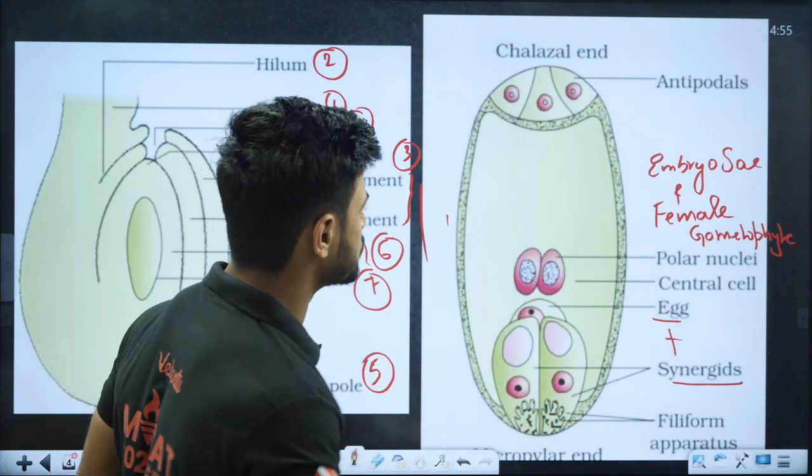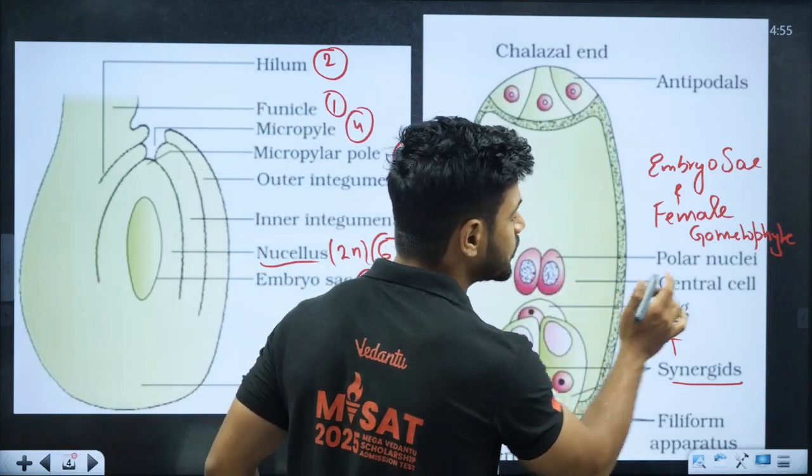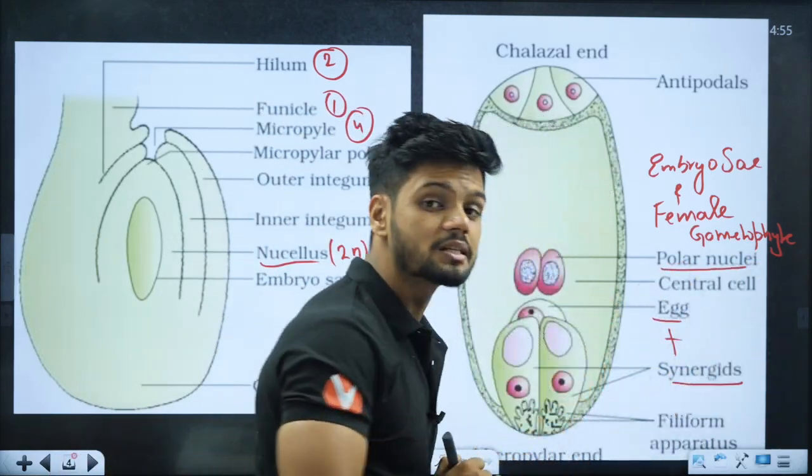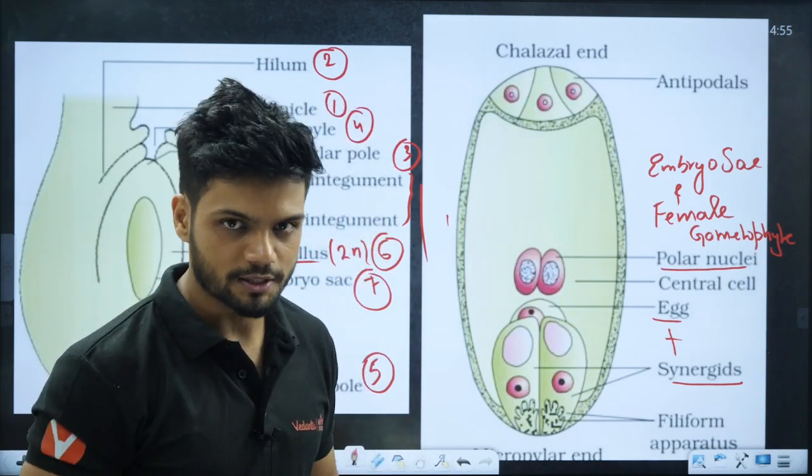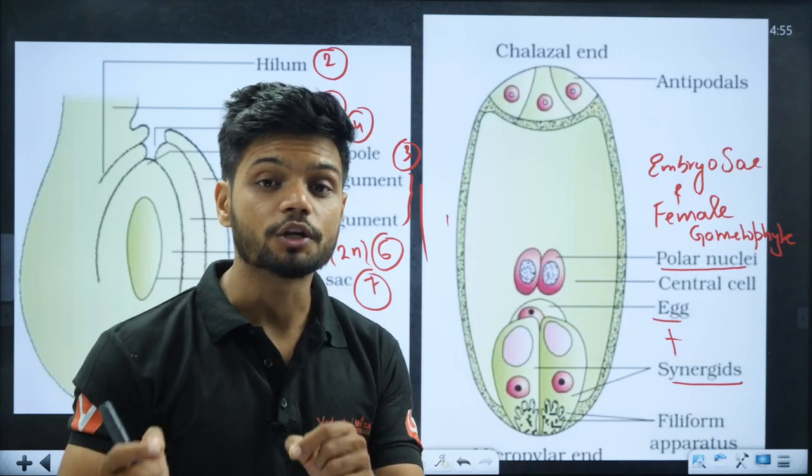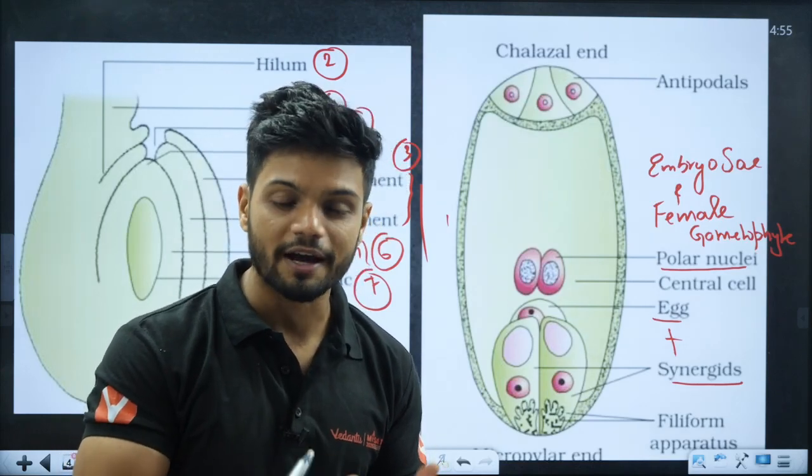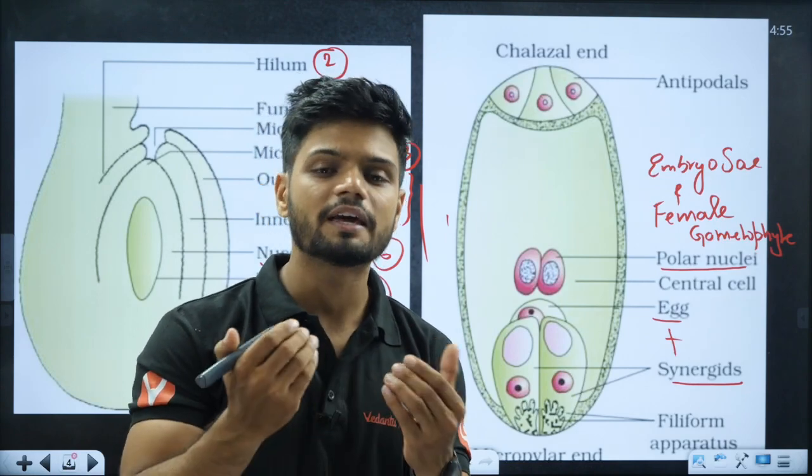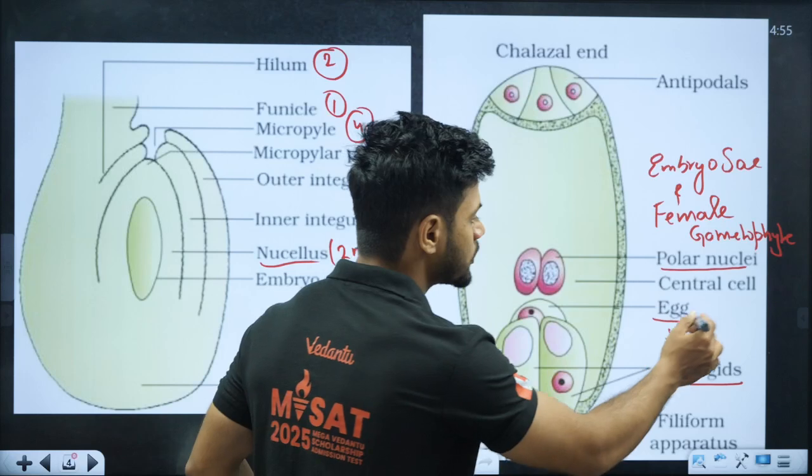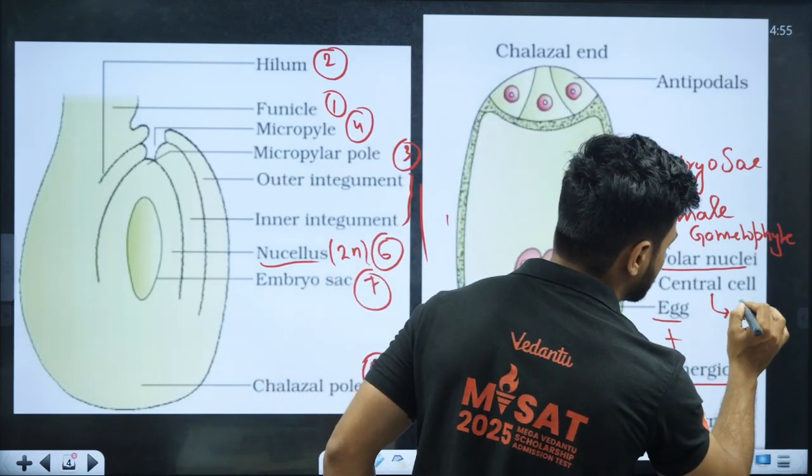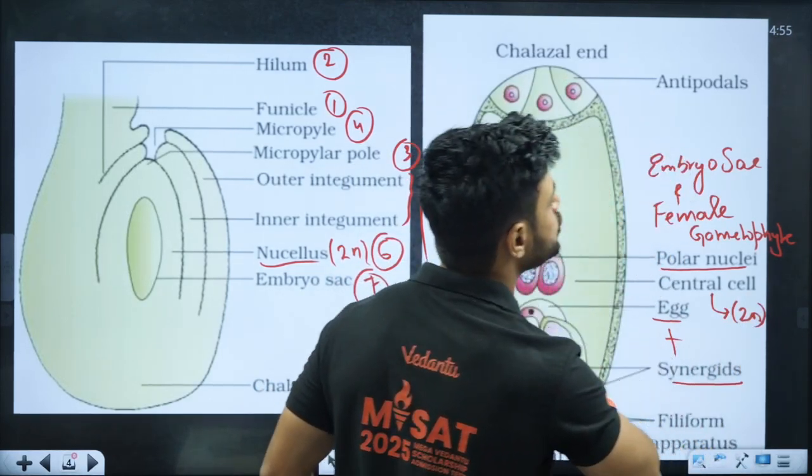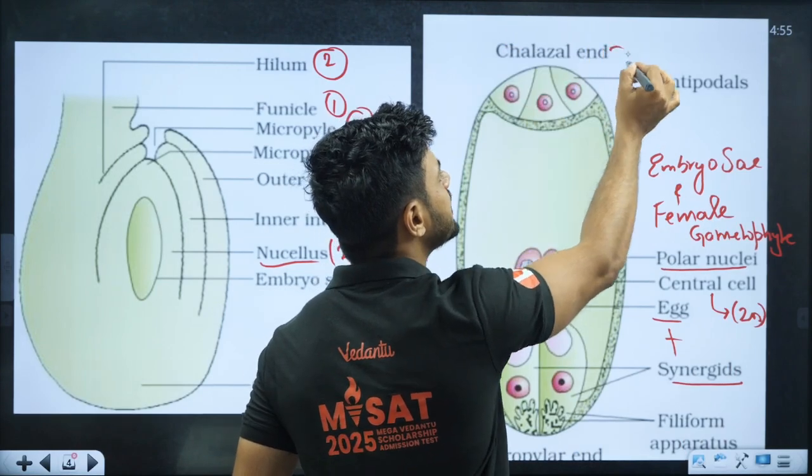In the middle there are two polar nuclei. When both polar nuclei fuse together they give rise to central cell. They can ask you the ploidy of central cell - that is diploid in nature. Towards the chalazal side we have three antipodals.